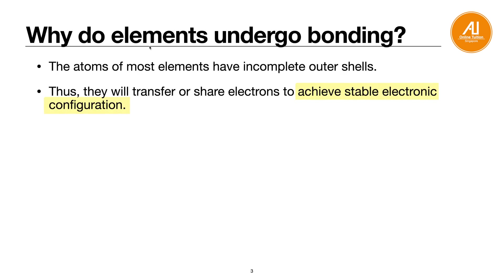We need to know why elements undergo bonding. Most atoms have an incomplete outermost shell, so they will either transfer or share electrons to achieve a stable electronic configuration. Transfer usually happens between metal and non-metal, and between non-metal and non-metal they will share electrons. Stable electronic configuration means their outermost shell will have 8 electrons, or have a full outermost shell.